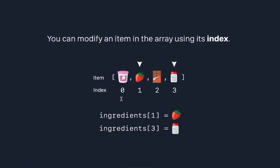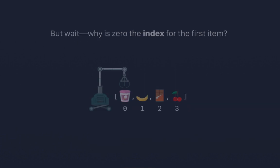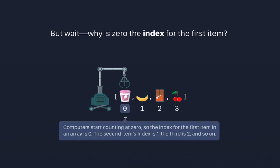Index always starts from the value 0 in computer science. In any programming language, they start from 0. This is something you must understand and keep in mind when you are doing programming.